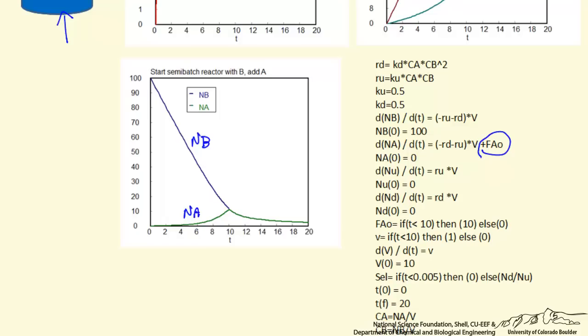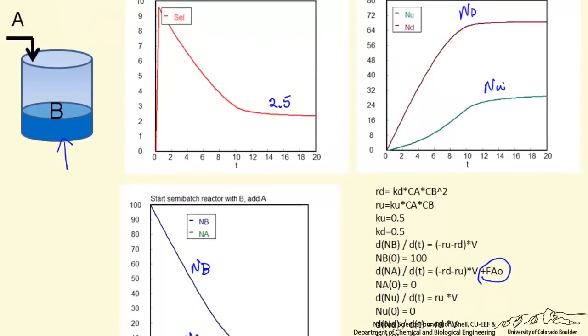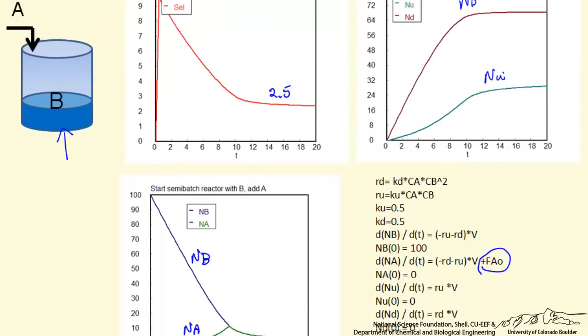And so this is an example where choosing the correct way to run a semi-batch reactor, when we have parallel reactions with different reaction orders, we can dramatically increase the selectivity.